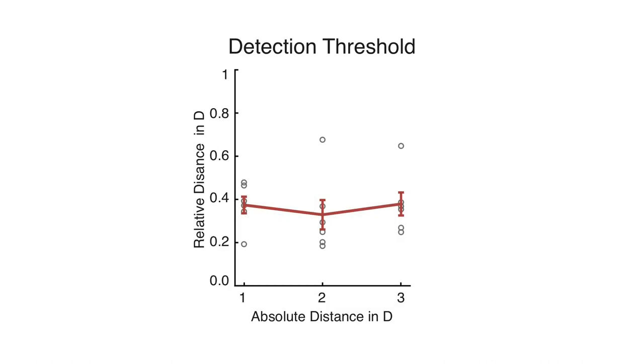We find that, on average, the ocular parallax effect is detectable in VR for objects spaced just 0.36 diopters apart. This is much lower than the conservative visual acuity model predicts.